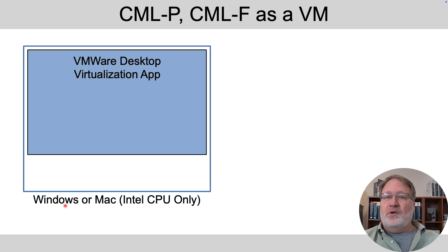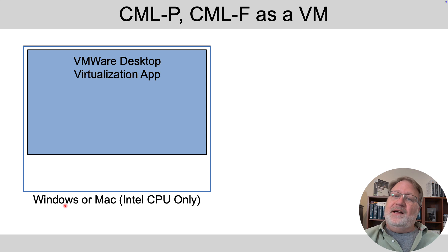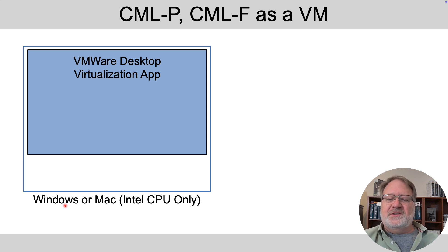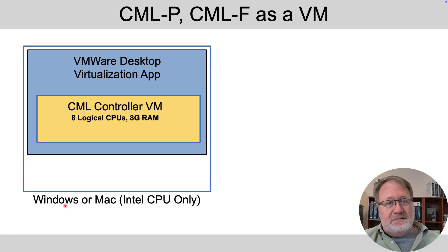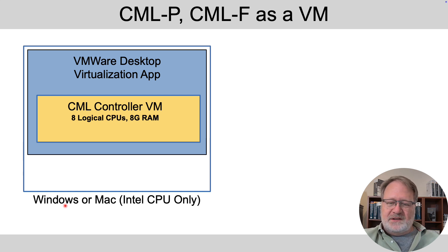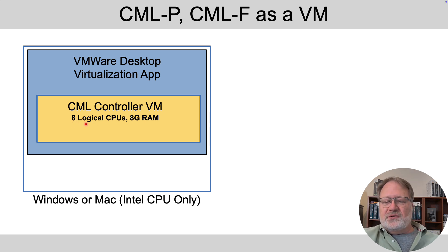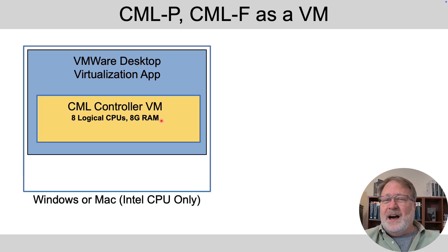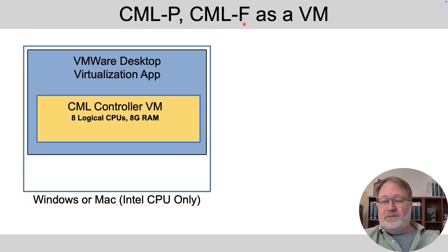You install one of the VMware virtualization apps depending on whether you've got Windows or Mac. Those apps are free from VMware as of somewhere in 2024, so you don't even have to pay for that. Once the virtualization app is installed, you download from Cisco CML Personal, Personal Plus, or Free and install that VM. It's a relatively straightforward install process, but the documentation will tell you things like: minimum eight logical CPUs — phrased as four physical CPUs — and a minimum of eight gig of RAM.